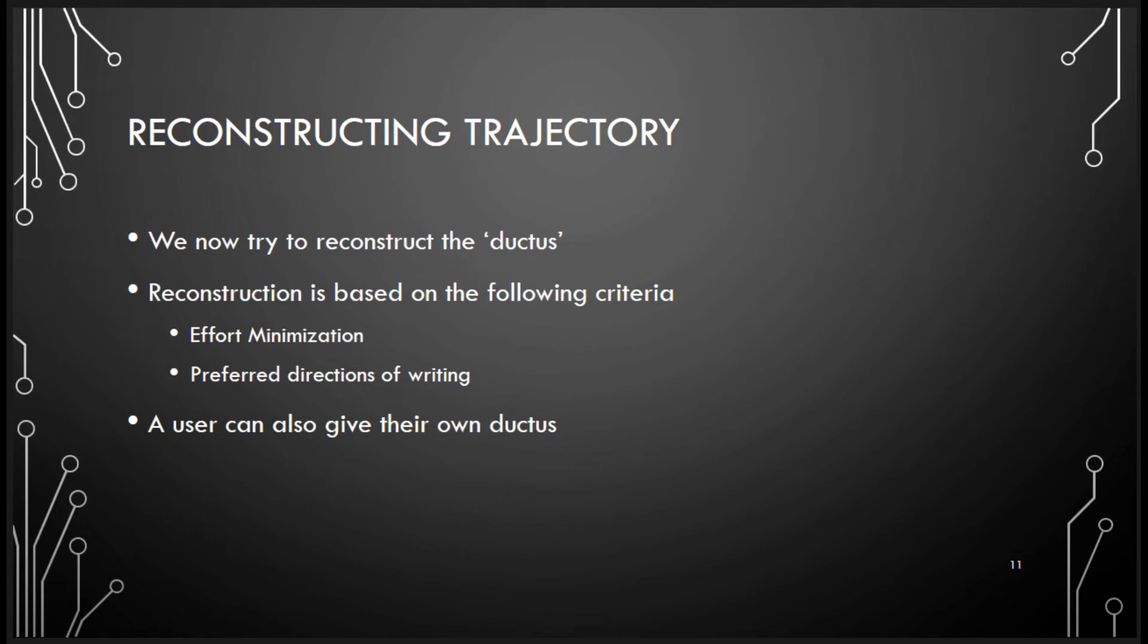I said the idea was to make ductus as the base of all the analysis. The problem is when you have an image, you don't have the ductus. One way is to reconstruct the ductus. And writing is more or less deterministic. And there's the concept of effort minimization. When people write something, they try to minimize effort required to write the character. And you have some heuristics, like the direction of writing. Based on all those things, the system tries to suggest you some possible ductus for the character. Of course, it could be totally wrong. The system also allows people to give their own ductus in case they don't agree with any of the ductus that's given by the system.